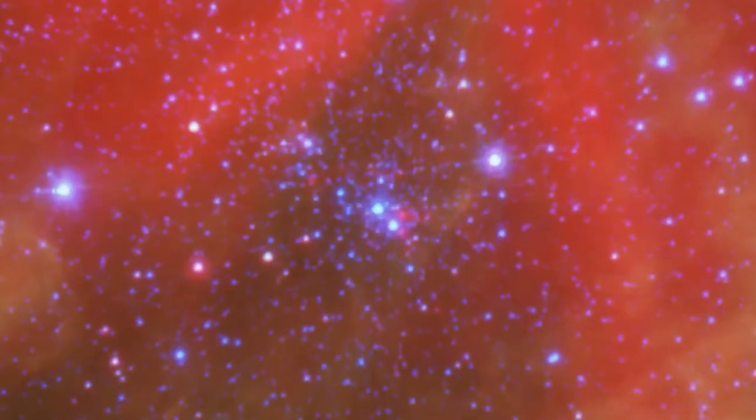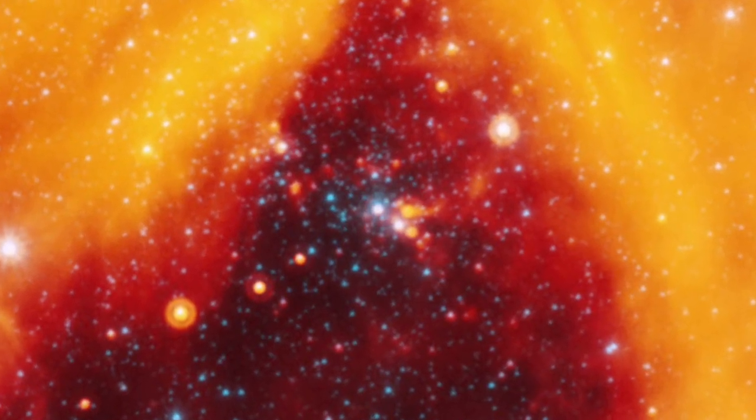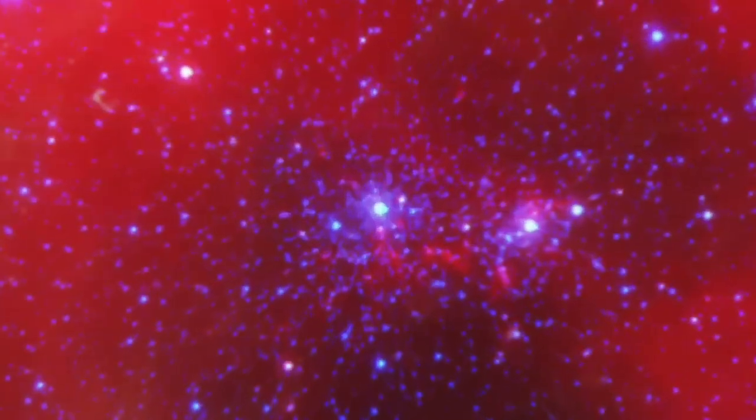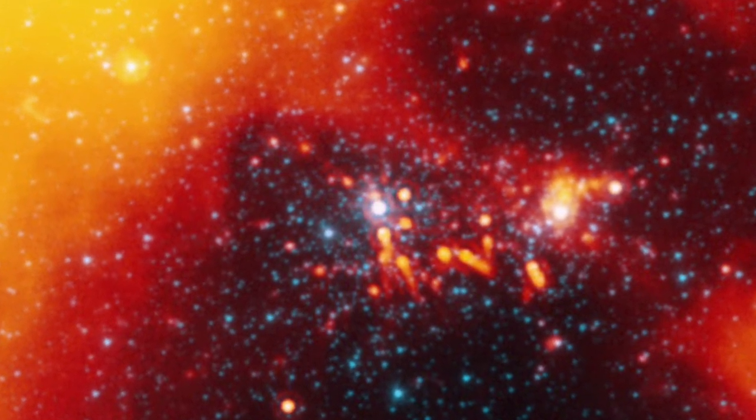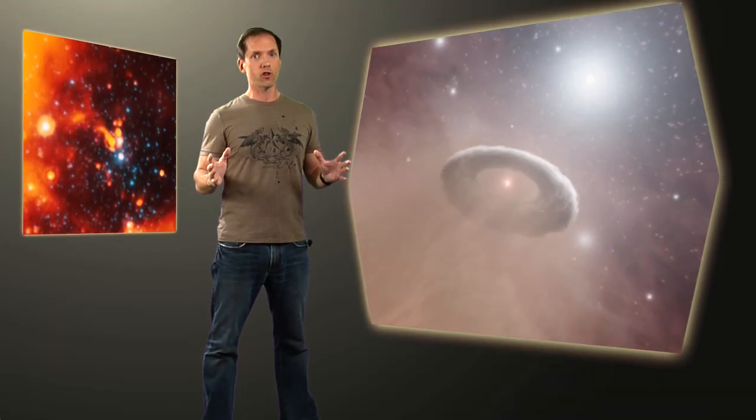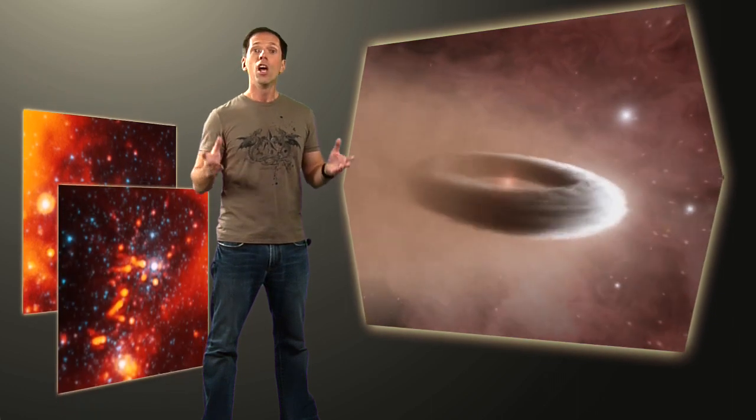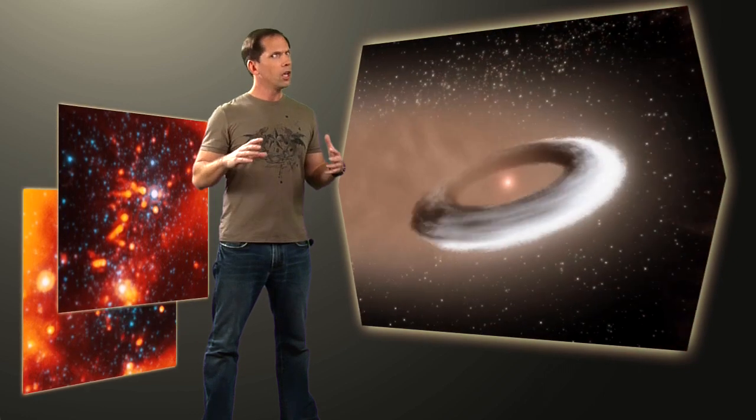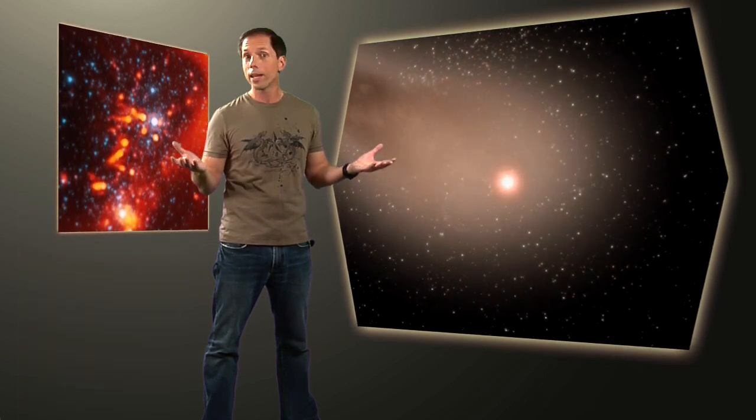Some of those young stars appear to be shedding their surrounding material before our very eyes. At 24 microns, seen in red, a number of smaller stars have dust tails pointing away from the nearby O stars. These dust tails indicate ongoing destruction of protoplanetary disks by stellar winds. Indeed, stars unfortunate enough to form too close to an O star could well be stripped bare before having any time to form planets at all.